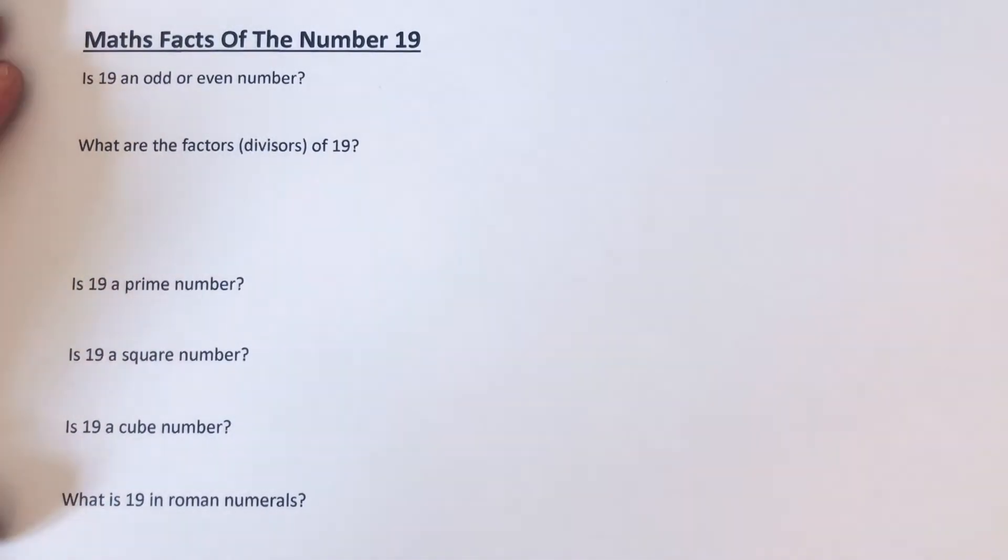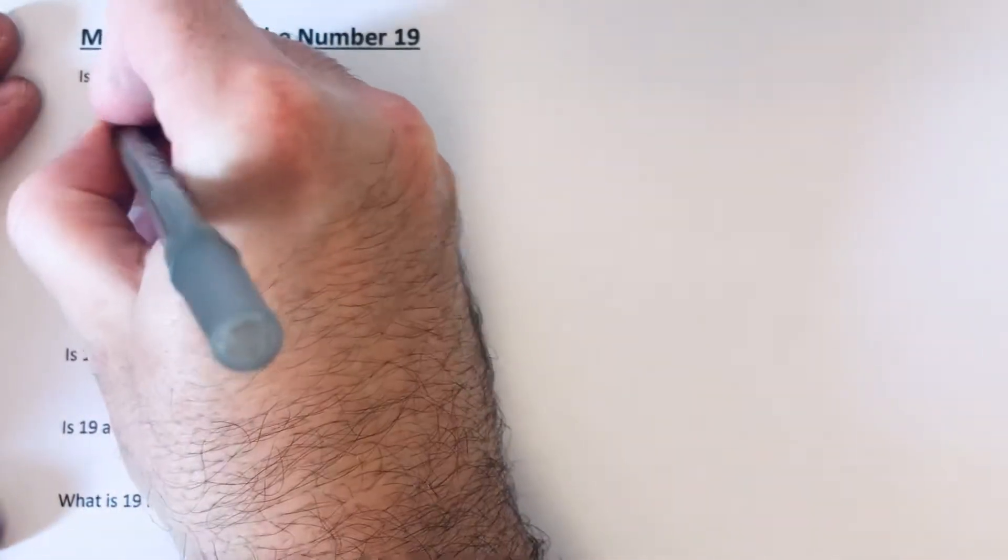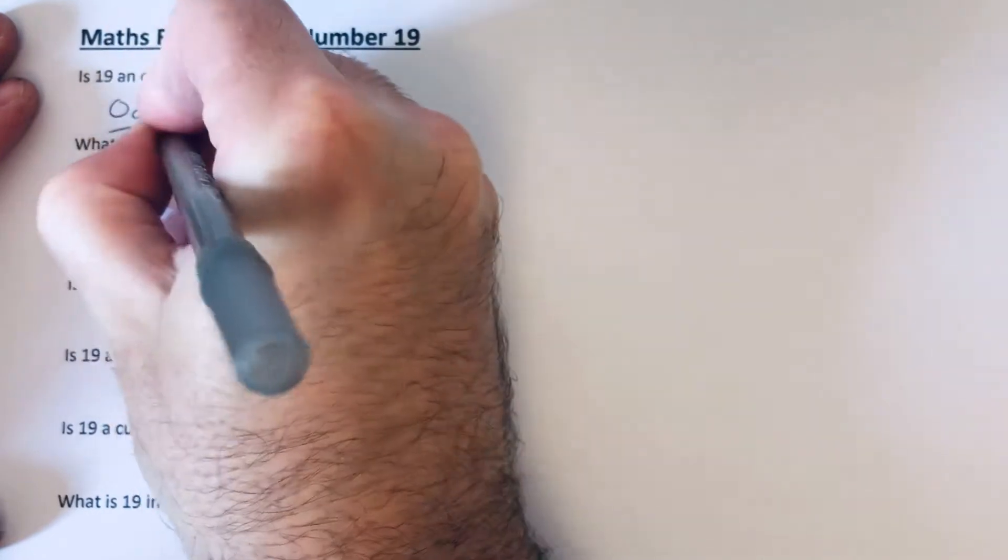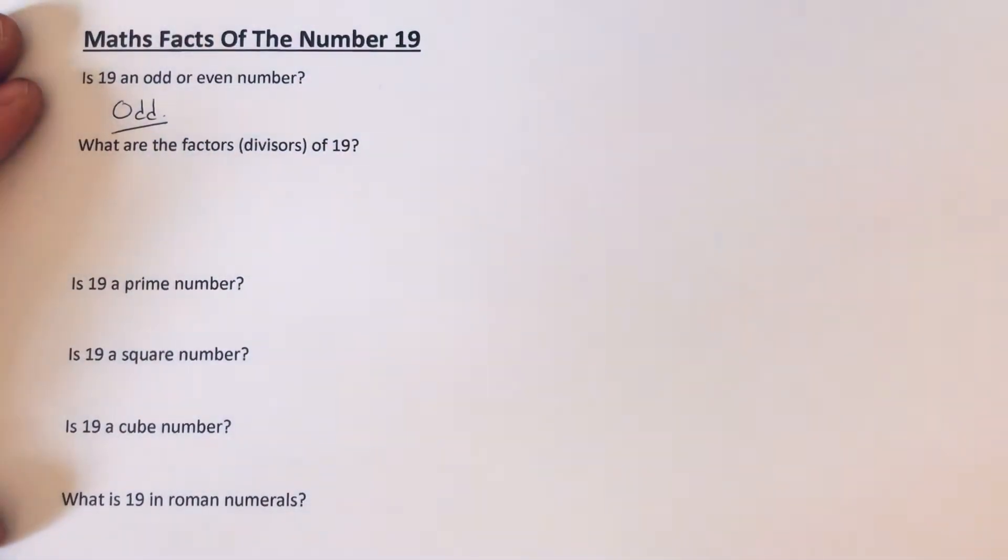So the first question then, is 19 an odd or an even number? Well, the answer to this is it's an odd number because it's not in the 2 times table.